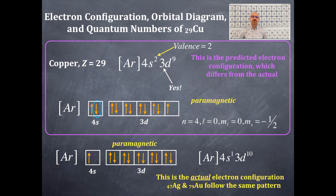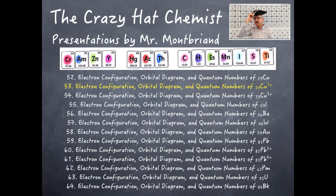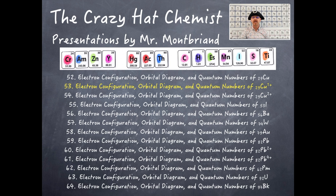There are predicted electron configurations and actual electron configurations. Most of the time we use the predicted, but your professor may ask for the actual in specific cases. There's another grouping that has an actual configuration different from the predicted, and we'll go over that next time. Give me a thumbs up, subscribe to my YouTube channel, and I'll see you next time for more cool chemistry videos.